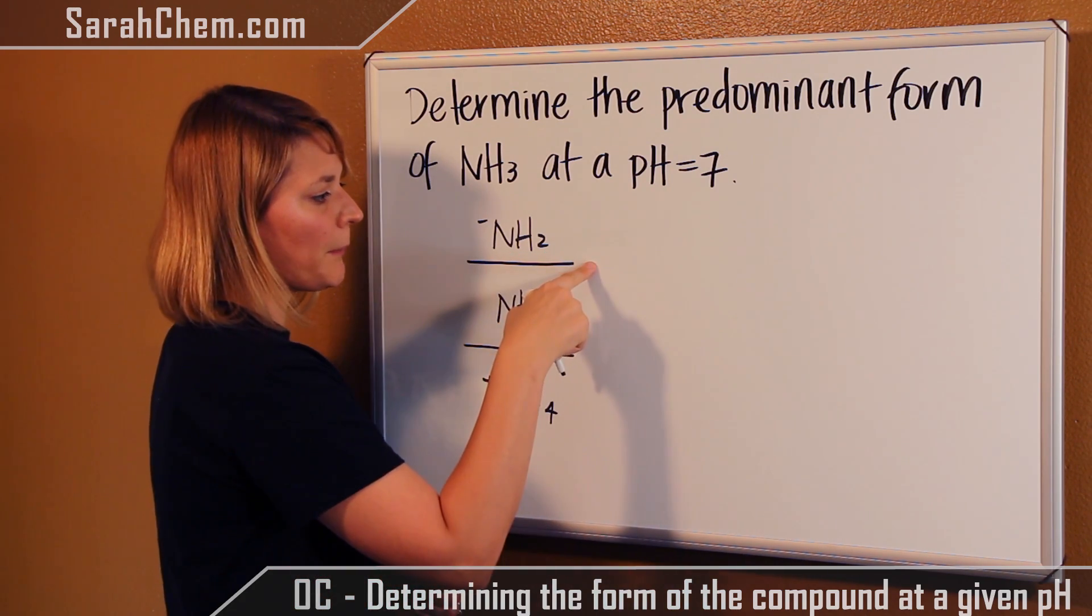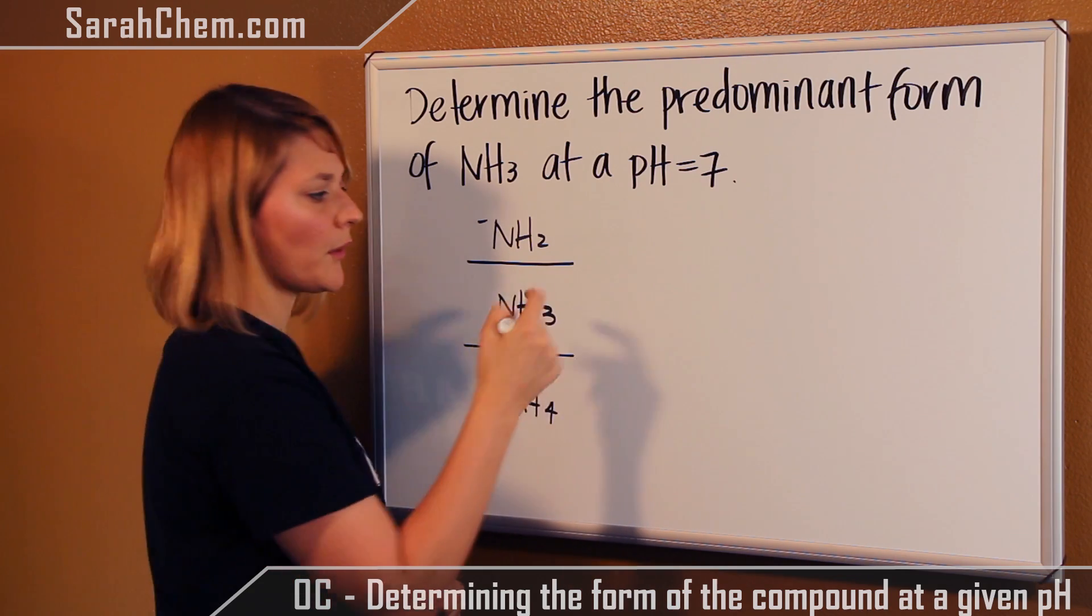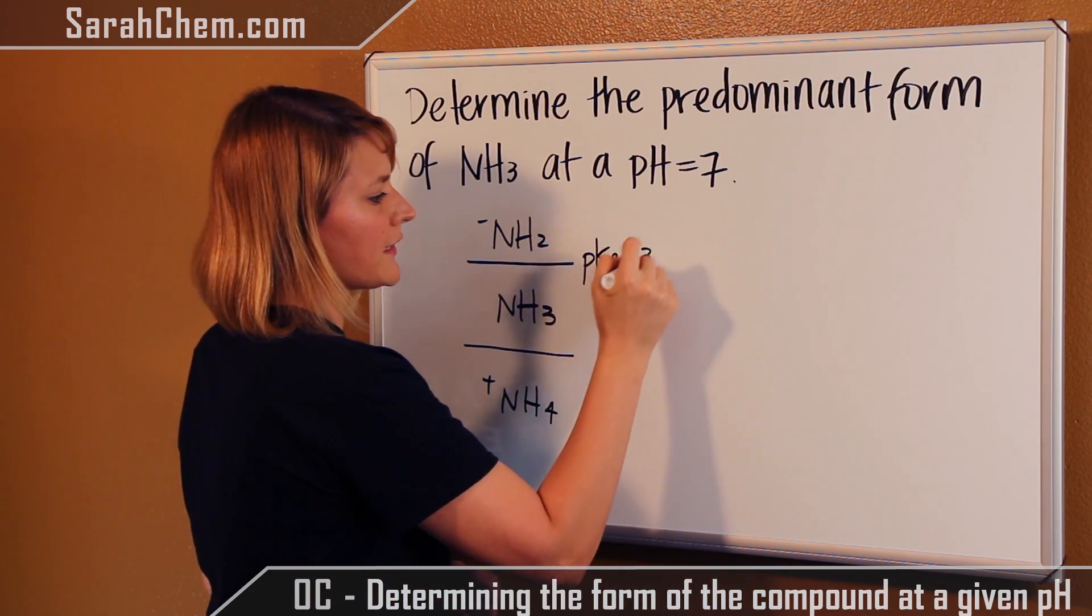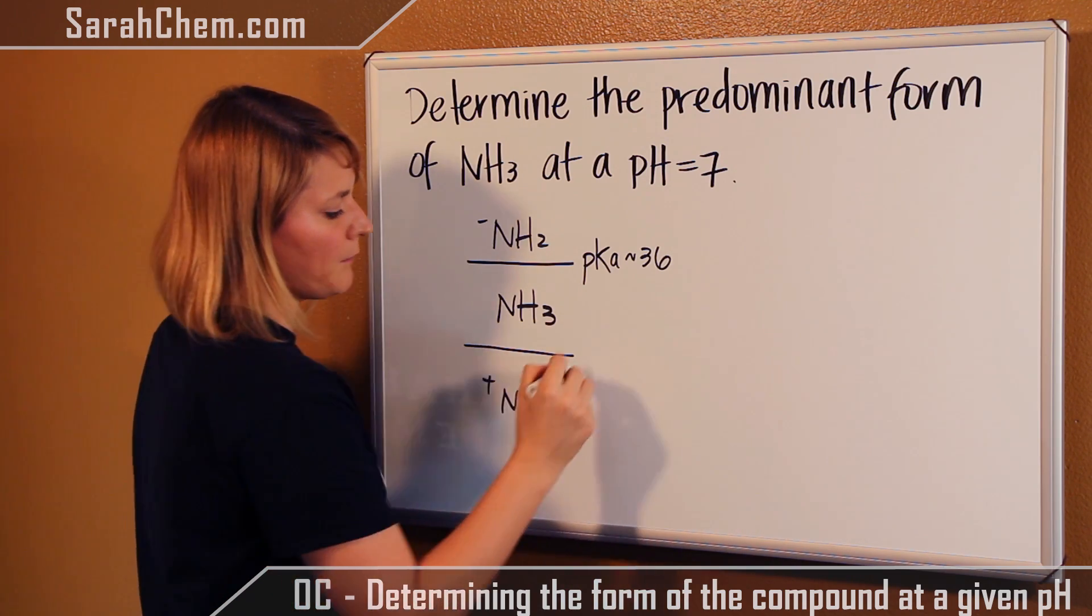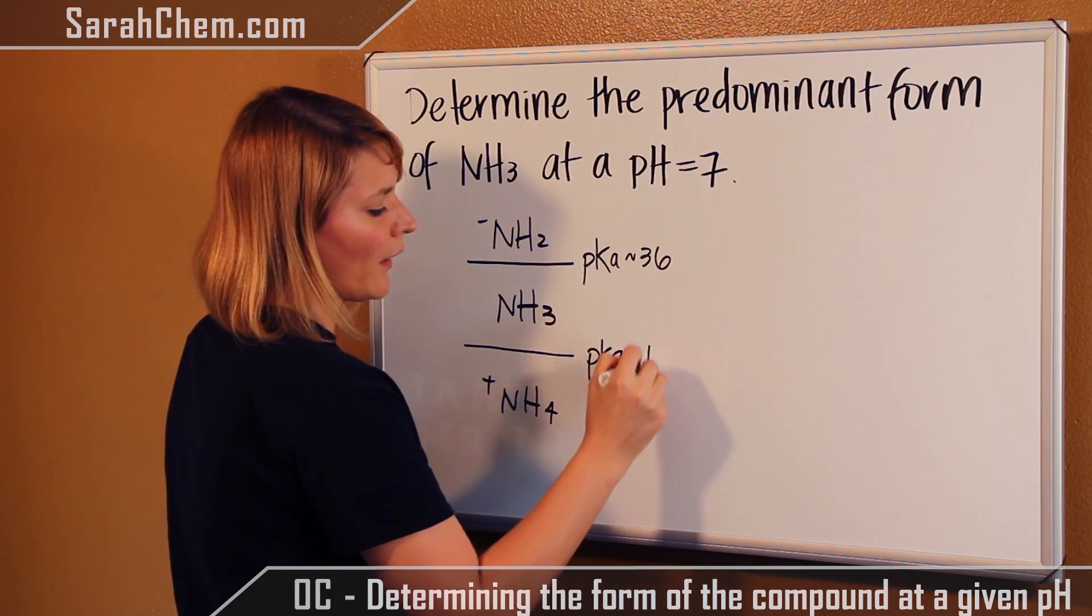Now, here we're going to put the pKa that's associated with the ammonia. So, the pKa of ammonia is about 36. Here we're going to put the pKa of our ammonium. That pKa is around 10.